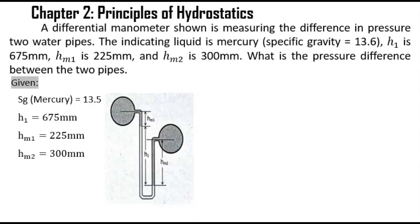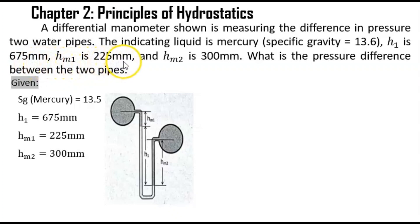Good day everyone. Today we're going to solve another problem in Chapter 2: Principles of Hydrostatics. In this video, we're going to solve this problem: a differential manometer shown is measuring the difference in pressure between two water pipes. The indicating liquid is mercury with specific gravity equal to 13.6, height 1 is 675 millimeters, height m1 is 225 millimeters, and height m2 is 300 millimeters. What is the pressure difference between the two pipes?